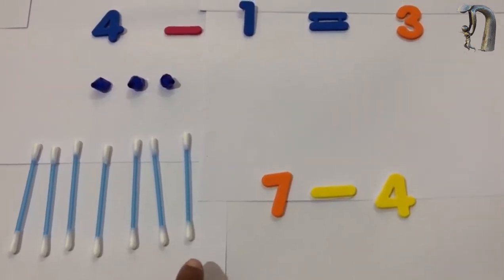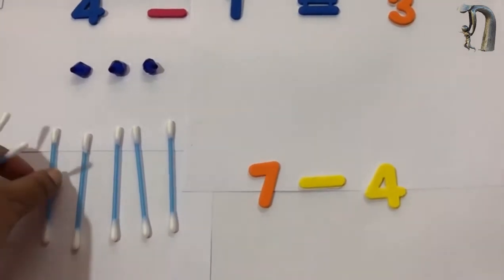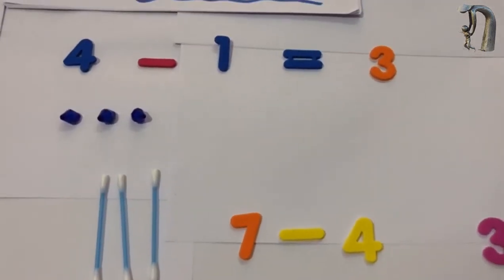So there are a total of 7. So 7, out of which take out 4: 1, 2, 3 and 4. Take them out. Now show the child. How many are left here?